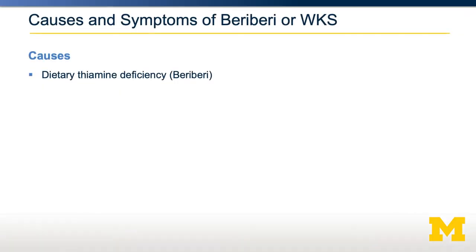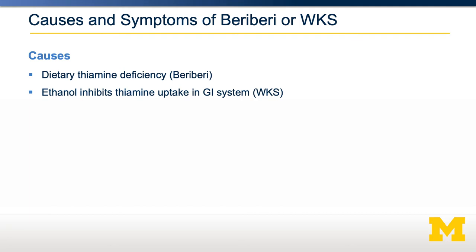Beriberi is a dietary deficiency in thiamine — you're eating a diet that does not have sufficient amounts of thiamine, and therefore your body doesn't have sufficient thiamine. In the case of Wernicke-Korsakoff syndrome, abbreviated WKS, ethanol inhibits thiamine uptake in the gastrointestinal system. People who are chronic alcoholics, even if they're getting sufficient amounts of thiamine, may have lower amounts in their blood and tissues. As such, people with WKS have very similar phenotypes to beriberi, even though supplementation with dietary thiamine may not be effective because it's an absorption defect.